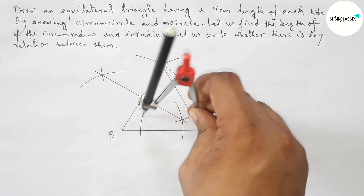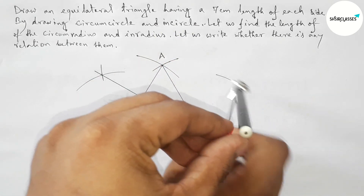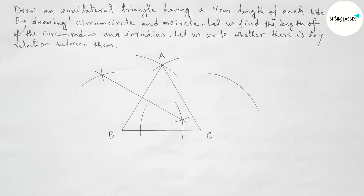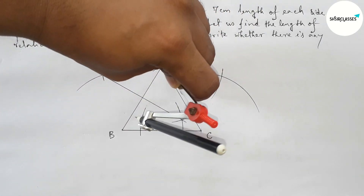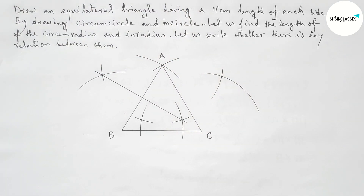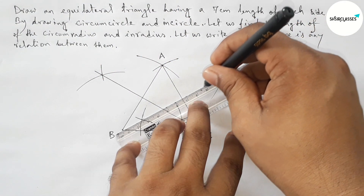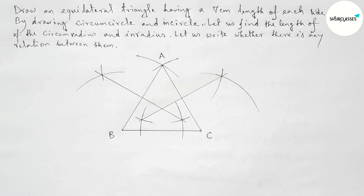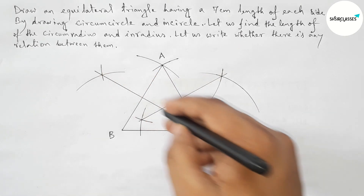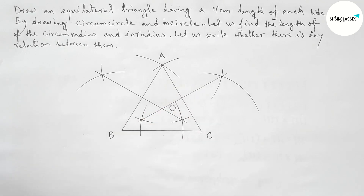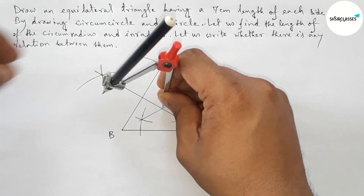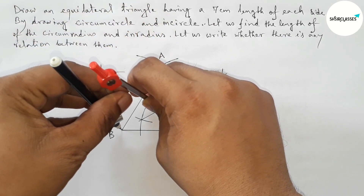Similarly, putting the compass on point C and taking greater than half of AC, drawing an arc. Now putting the compass on point A and cutting arcs on both sides. Joining this perpendicular bisector. Both perpendicular bisectors meet at a point — taking that as point O, the circumcenter.